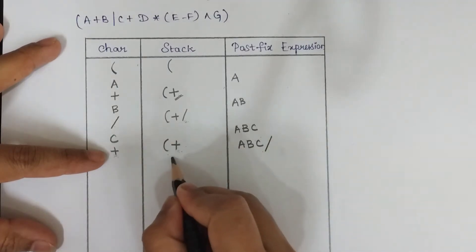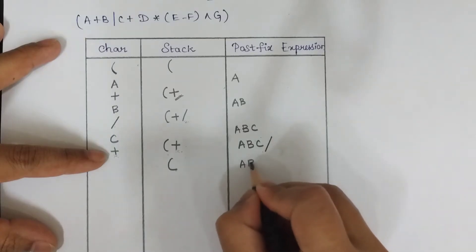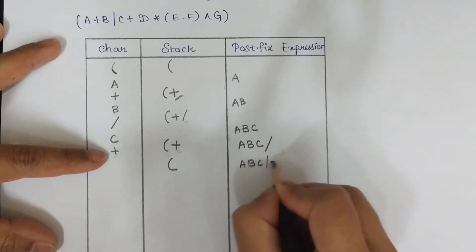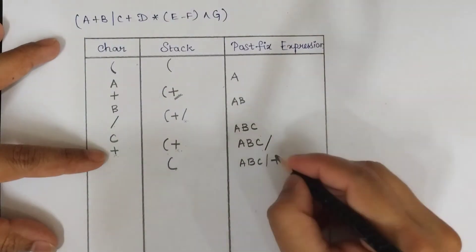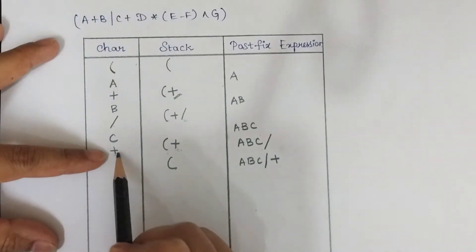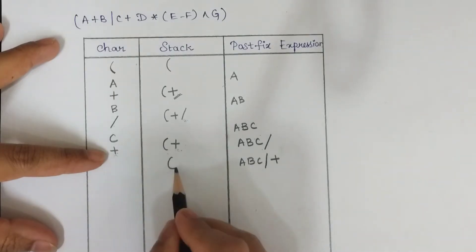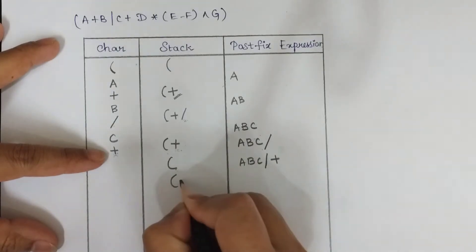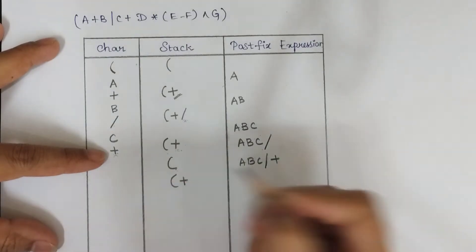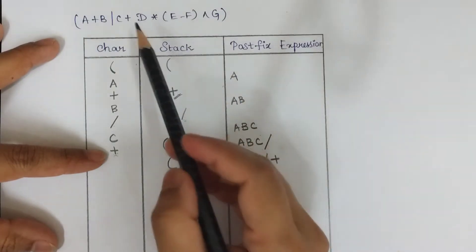Once you pop it out, the stack has only open parenthesis, and this plus gets appended to the postfix expression. Now compare the new plus operator with the stack top — the stack top is open parenthesis. Since it is open parenthesis, push this plus into the stack.